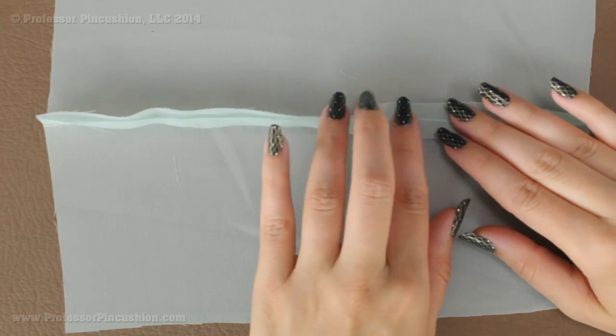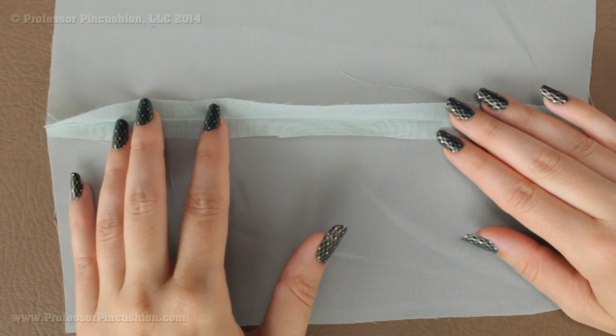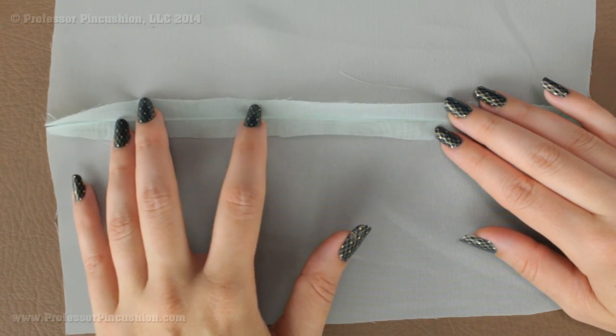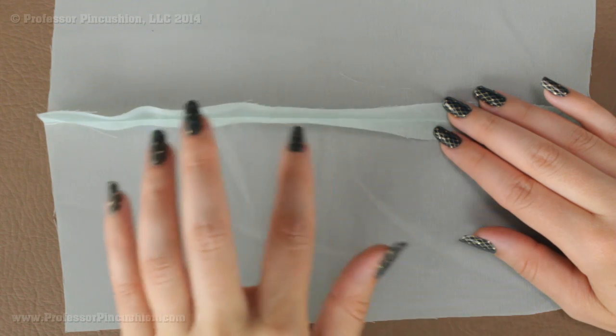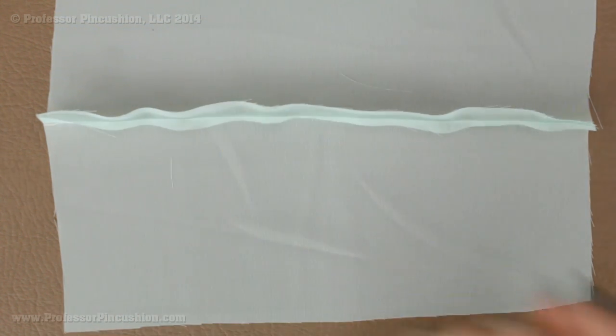If you have a serger, you can use the serger to finish your raw edges or if you have a regular sewing machine, you can go ahead and use a zigzag stitch on the edge as well. That should help if it's still a problem, you can definitely use that fabric sealant again and just put it on the edge and that will definitely take care of the fray.